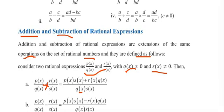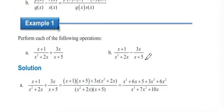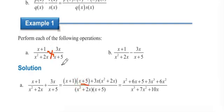For example, perform the following operation: (x + 1) / (x² + 2x). Here Q(x) = x² + 2x, R(x) = x + 5. Using cross-multiplication: (x + 1)(x + 5) + 3x(x² + 2x), over the whole (x² + 2x)(x + 5).